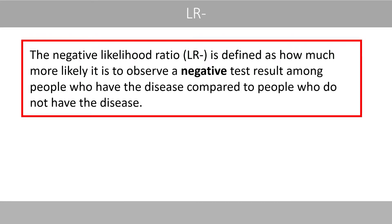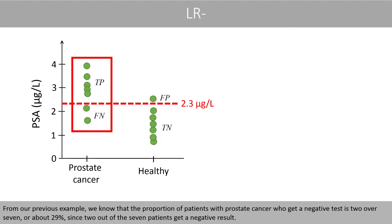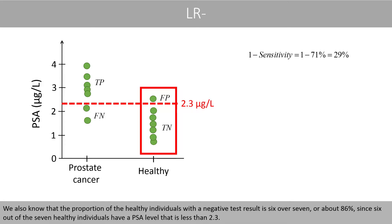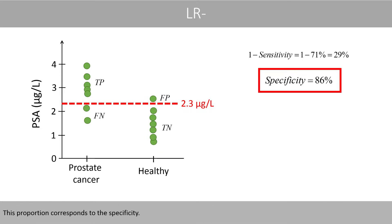The negative likelihood ratio is defined as how much more likely it is to observe a negative test result among people who have the disease compared to people who do not have the disease. From our previous example, we know that the proportion of patients with prostate cancer who get a negative test is 2 over 7, or about 29%, since 2 out of the 7 patients get a negative result. This proportion can also be calculated as 1 minus the sensitivity. We also know that the proportion of healthy individuals with a negative test result is 6 over 7, or about 86%, since 6 out of 7 healthy individuals have a PSA level less than 2.3. This proportion corresponds to the specificity.